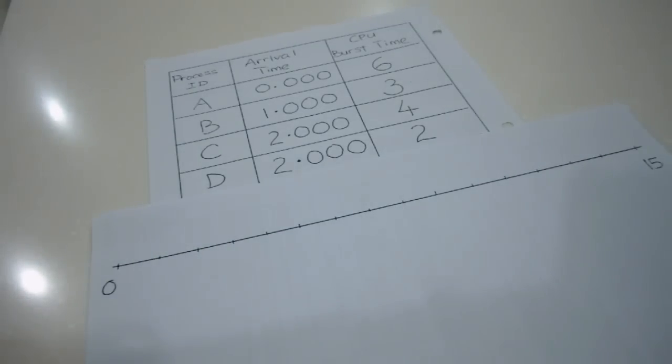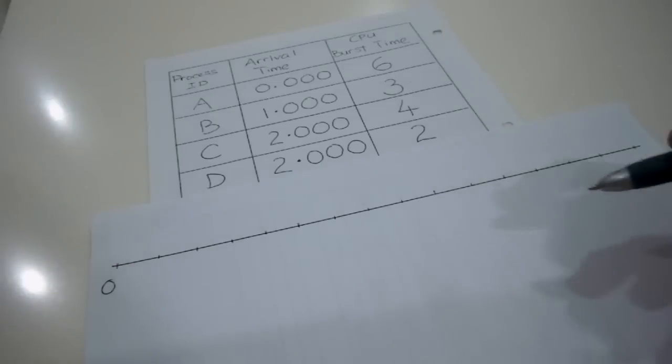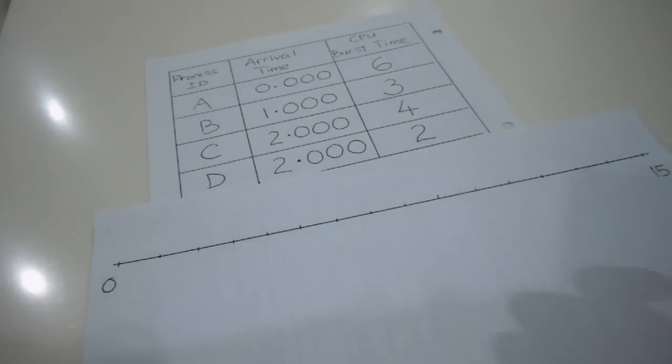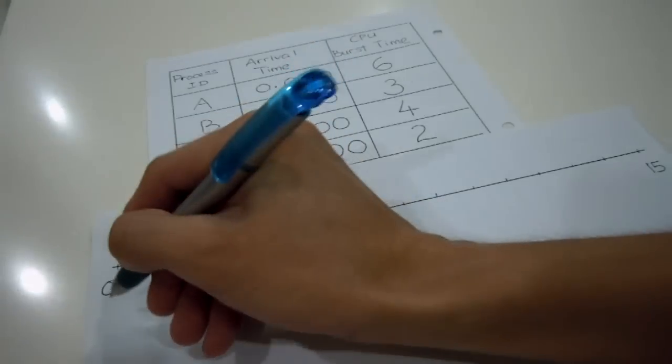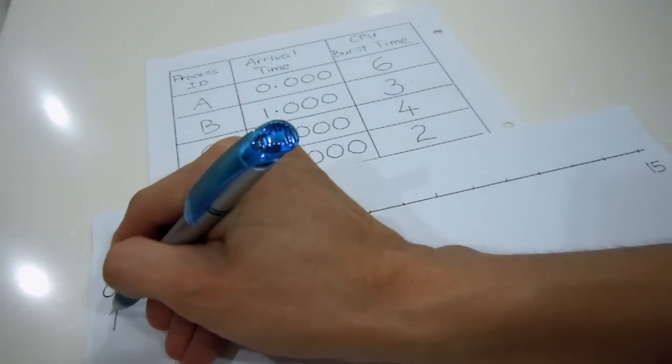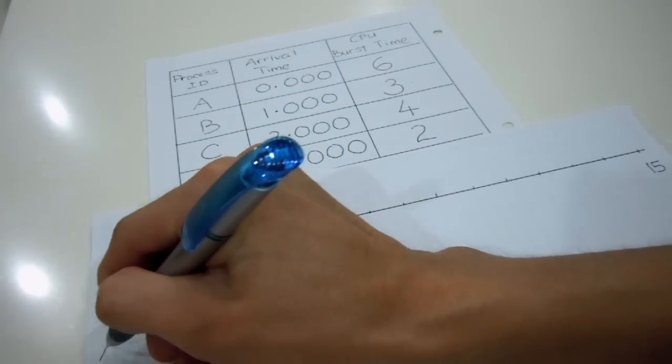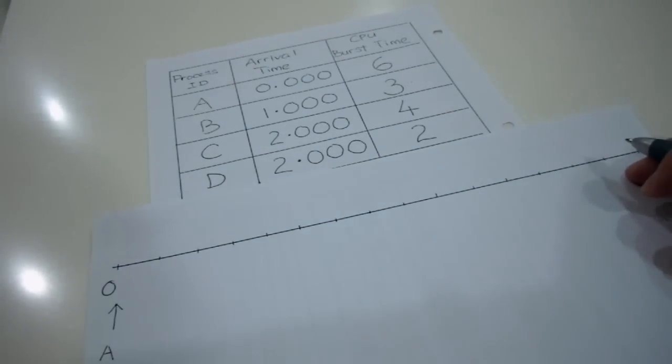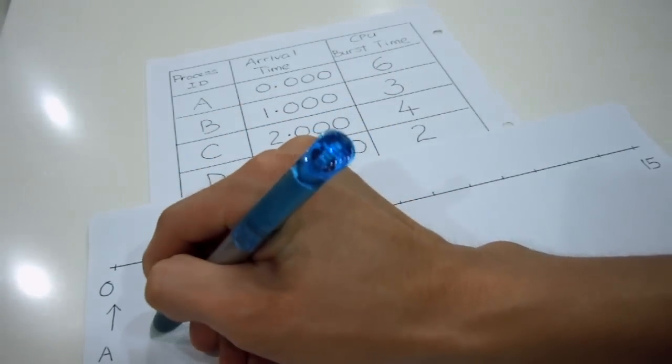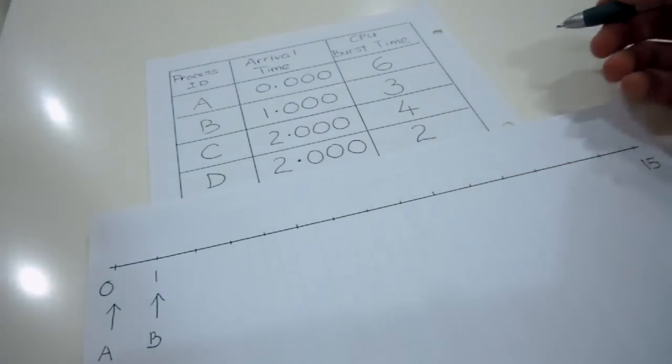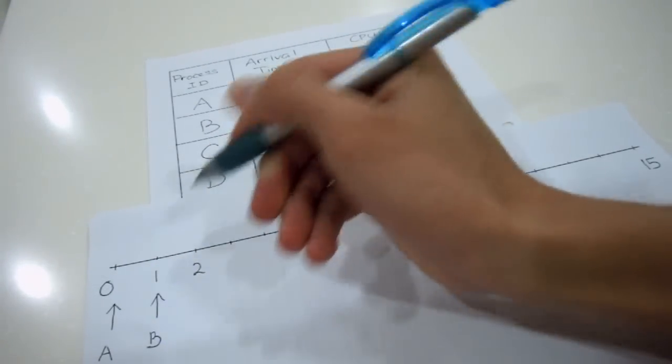And by the way, before you actually start each process, it's good that you indicate the arrival time of each of the process IDs so that it becomes like a reminder to you what are the arrival times for each process. So for this case, I'm going to start with A, I'm going to indicate with an arrow here to show that it actually arrives at time equals 0, and then followed by B at 1, and followed by C and D at 2.